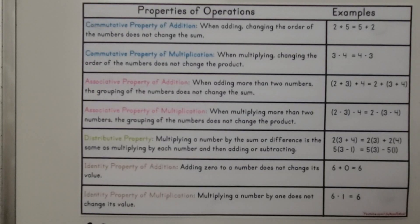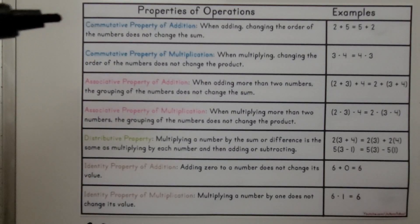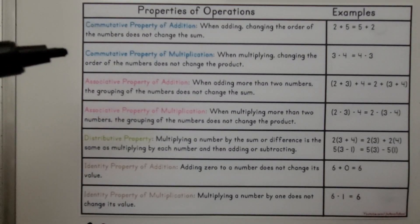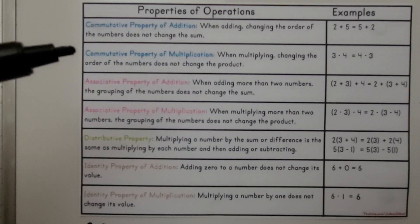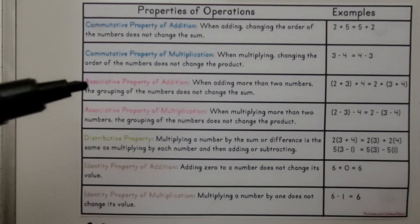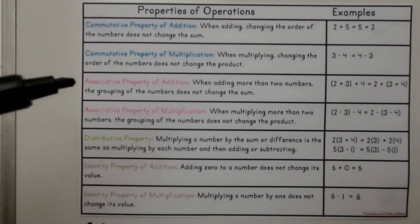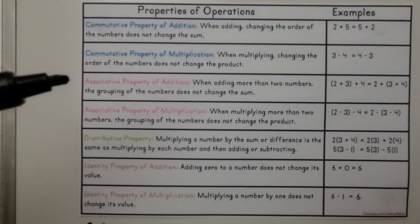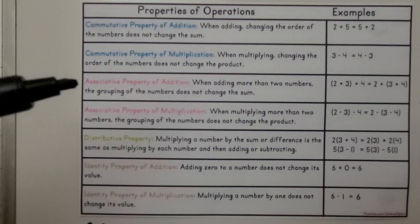Here are the properties of operations with some examples. The commutative property of addition says that we can add in any order, and the commutative property of multiplication says that we can multiply in any order. The associative property is the grouping property with parentheses. When adding more than two numbers, the grouping of the numbers does not change the sum, so we can move the parentheses.